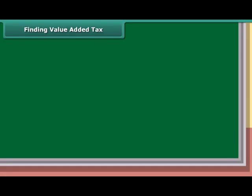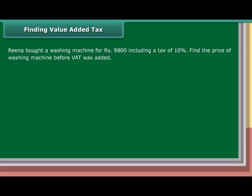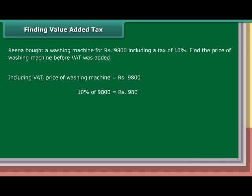Finding Value Added Tax: Rina bought a washing machine for Rs. 9,800 including a tax of 10%. Find the price of the washing machine before VAT was added. Including VAT, price = Rs. 9,800. 10% of Rs. 9,800 = Rs. 980. Price before VAT = Rs. 9,800 − Rs. 980 = Rs. 8,820.